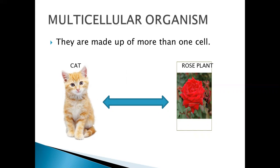The body functions of these are advanced and developed. The body structure is also complicated or advanced. Few examples that are given in front of you are the cat and the rose plant. Many examples are present in your surrounding. We, being humans, are also multicellular organisms.